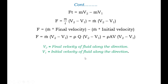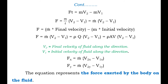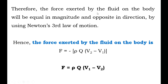Further simplifying in the X and Y directions, we get Fx equals M-dot·(V2x minus V1x) and Fy equals M-dot·(V2y minus V1y). This equation represents the force exerted by the body on the fluid. Therefore the force exerted by the fluid on the body will be equal in magnitude and opposite in direction.